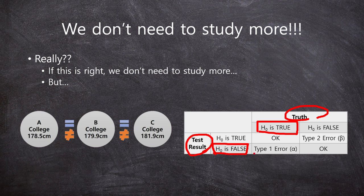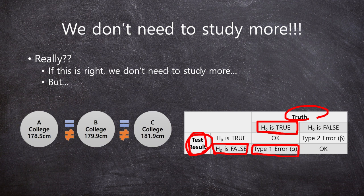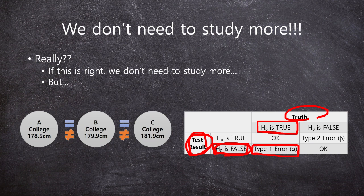The truth is the null hypothesis is true. But in the test, the null hypothesis is false. So it's wrong. And we call it Type 1 error.